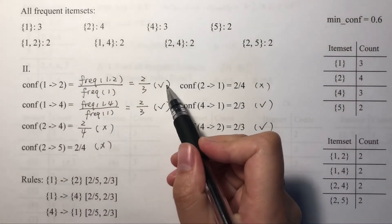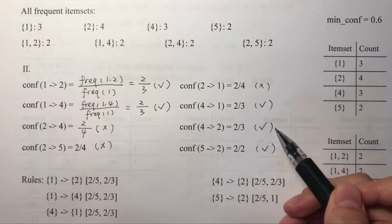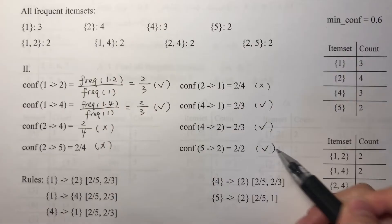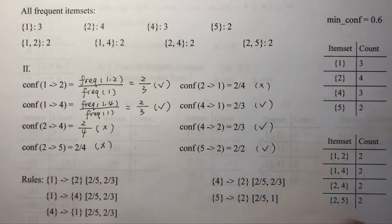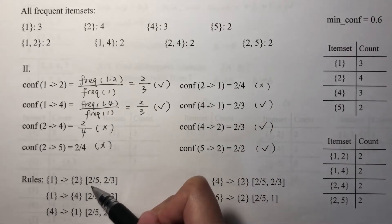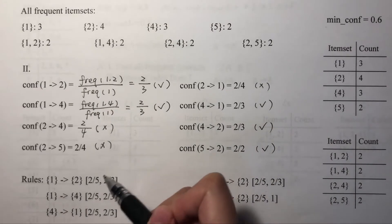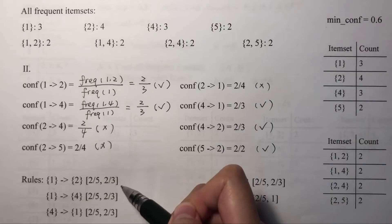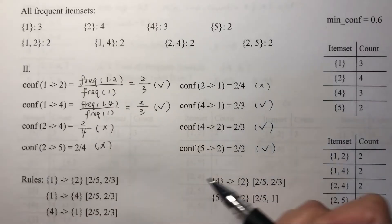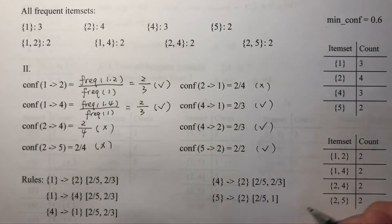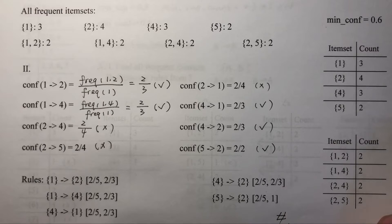After removing rules that do not satisfy the minimum confidence, we are left with five rules. We write the support and confidence together with each rule as the final answer. This is the answer to this question.